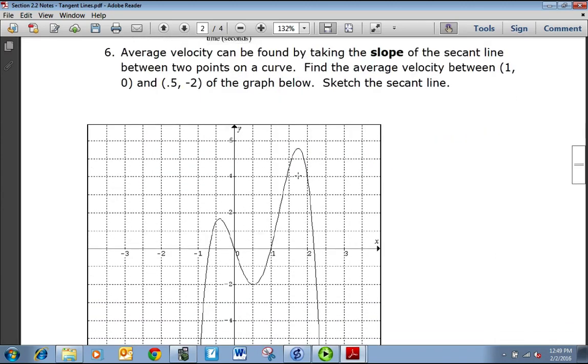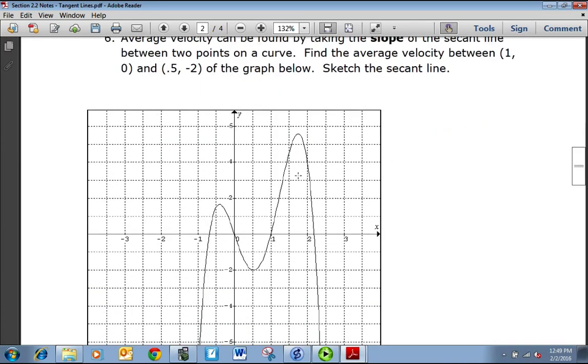So average velocity can be found by taking the slope of a secant line between two points on a curve. Let's find the average velocity between 1, 0 and 0.5, negative 2 on this graph. So 1, 0 is this point here, and 0.5, negative 2 is this point right here. If I draw a secant line through those two points, it looks like so. I want to find the slope of that secant line, so we call that m secant. That's going to be the change in y values, so that y value goes from negative 2 to 0, over the change in x values. So 0.5 minus 1. So it's negative 2 over negative 0.5, which is equal to positive 4. That's the slope of that secant line.